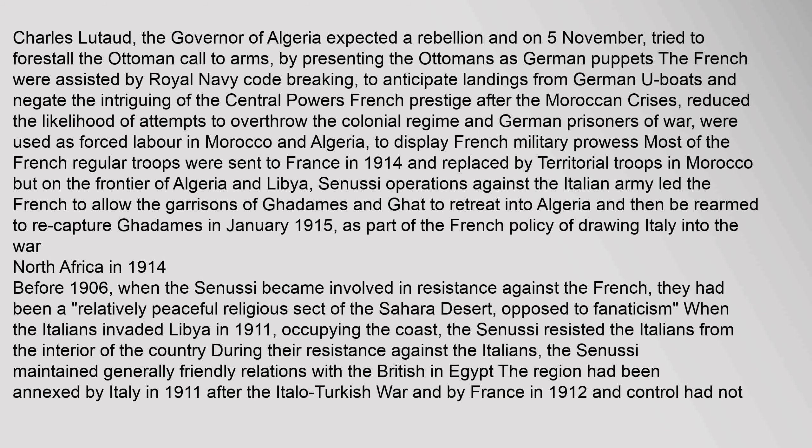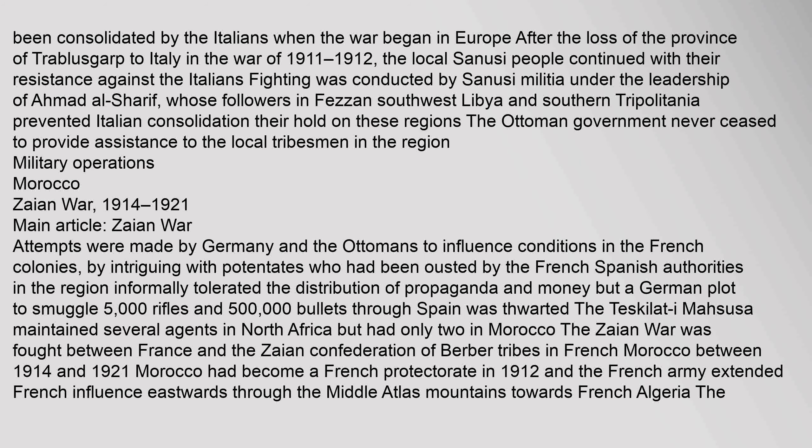North Africa in 1914: Before 1906, when the Senussi became involved in resistance against the French, they had been a relatively peaceful religious sect of the Sahara Desert, opposed to fanaticism. When the Italians invaded Libya in 1911, occupying the coast, the Senussi resisted the Italians from the interior of the country, while maintaining generally friendly relations with the British in Egypt. The region had been annexed by Italy in 1911 after the Italo-Turkish War and by France in 1912, and control had not been consolidated by the Italians. The local Senussi people continued their resistance against the Italians under the leadership of Ahmad al-Sharif, whose followers in Fizan and southern Tripolitania prevented Italian consolidation. The Ottoman government never ceased to provide assistance to the local tribesmen in the region.